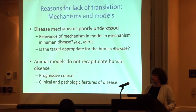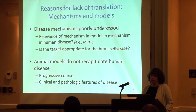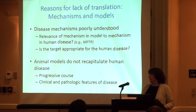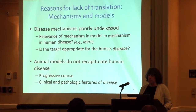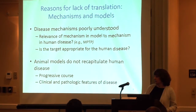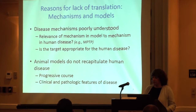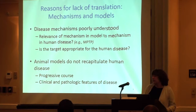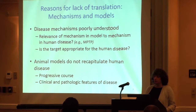What are the possible reasons for this lack of translation from pre-clinical work into clinical trials? One is thinking about the mechanisms and models used. Is the mechanism of disease well understood? Can we really have a model that recapitulates the human disorder? We can think about MPTP for Parkinson's disease — a mitochondrial toxin that causes loss of dopaminergic neurons. But is that really relevant to the main reason why cells die within patients with Parkinson's disease?